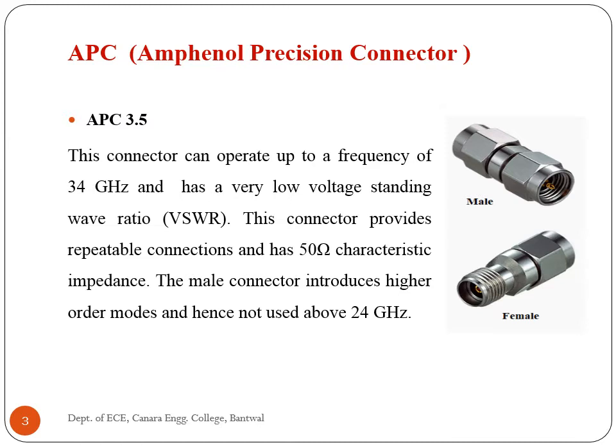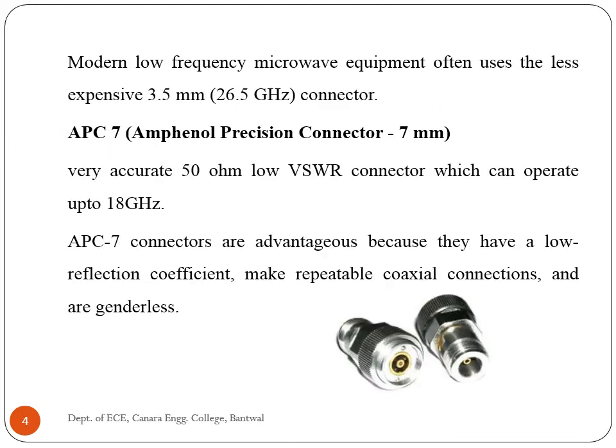The male connector introduces higher order modes and hence is not used above 24 gigahertz. Mechanical tolerances, stability, temperature performance, SWR (standing wave ratio), repeatability, loss, and wear are all much better in the 3.5 millimeter interface. APC 3.5 millimeter connectors are manufactured in male or female gender with 50 ohm impedance, and are available in bulkhead or no-mount options with clamp or solder attachment methods.